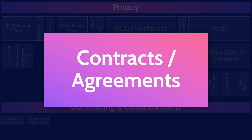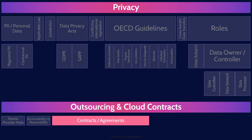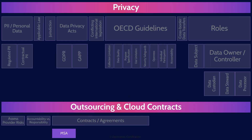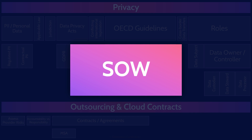Contracts are essential for cloud services because they define and protect the rights, responsibilities, and expectations of both the service provider and the customer. Cloud service contracts serve as a legal foundation for the relationship, addressing critical aspects such as data security, service levels, liability, and compliance. An MSA, a master services agreement, is used to build a long-term legal relationship with a provider. It defines the basics of the relationship such as definitions, dispute resolution, and contract termination clauses. Once an MSA is established, you can create individual statements of work (SOWs) as contracts on a per-project basis, which can help reduce legal costs while still allowing flexibility for each project.